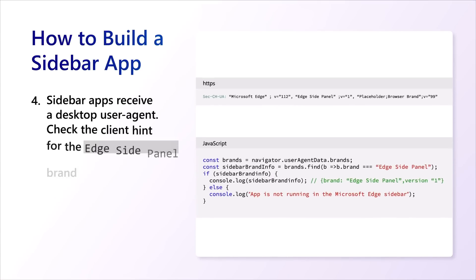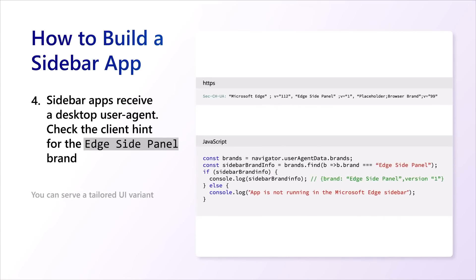Finally, you can detect when your app is being used within the sidebar to serve a tailored user experience. You could choose to, for example, build a custom variant or repurpose one that was designed for narrower mobile or tablet interfaces. Sidebar apps will receive a desktop user agent, and you can inspect the client hint for the Edge side panel brand.